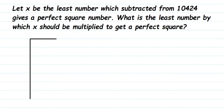In this long division method, we first write down the number 10,424. We start pairing up digits from the right side: 24 becomes one pair, 04 becomes another pair, and the single digit 1 is left without a pair. So we have three groups: 1 | 04 | 24.